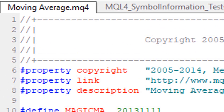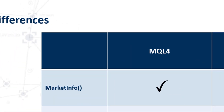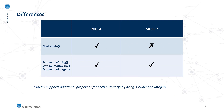So let's go back to our presentation. MQL4 has MarketInfo, which takes a few parameters we'll discuss shortly. It also contains SymbolInfoString, SymbolInfoDouble, and SymbolInfoInteger. Both MQL4 and MQL5 have these functions with exactly the same variations in terms of number of arguments and overloads. However, the number of properties that MQL5 supports is larger in number compared to MQL4.